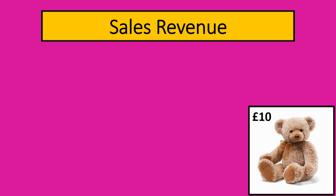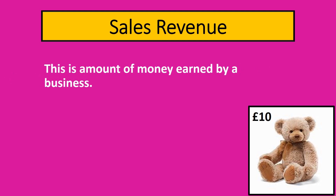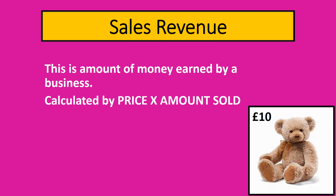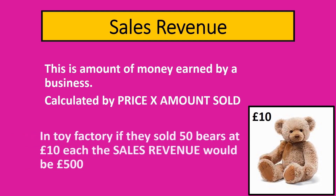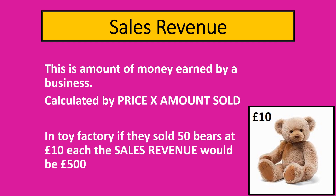The final term we need to know is sales revenue — we might call it sales, we might call it revenue, but we're going to call it sales revenue. This is the amount of money earned by the business. We calculate this by taking the price of the item — my bear is looking lovely at £10 — and multiplying it by the amount sold. So if our toy factory sold 50 bears at £10 each, the sales revenue would be £500. That is what sales revenue is: the amount of money the business has earned.